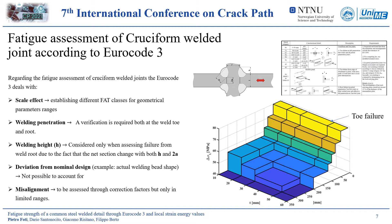The Eurocode 3 deals with the cruciform weld joint by considering the scale effect, establishing different FAT classes constant in particular ranges of geometrical parameters. Regarding the possibility to have a different degree of penetration for the welding, the Eurocode 3 suggests a verification at both the weld toe and root. However, it is worth noting that such a verification must be done with two different fatigue curves. A parameter only partially considered by the standard is the welding leg. Indeed, it is considered when assessing the fatigue strength at the weld root, considering that the net section to be considered changes both with the welding leg and the welding penetration. Deviations from the nominal design of the joint, such as the welding bead shape, are not possible to be considered, while deviations such as the misalignment can be considered through correction factors, but only within specific ranges.